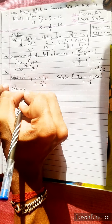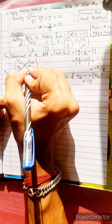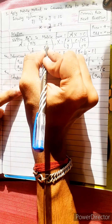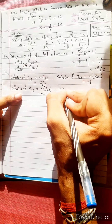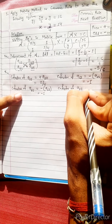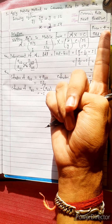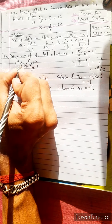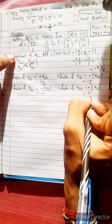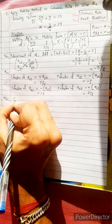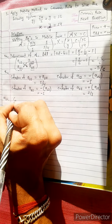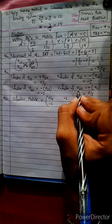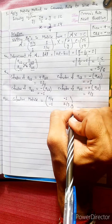Cofactor of a2,1: index sum is 2 plus 1 equals 3, which is odd, so it is negative. Cofactor of a2,1 equals minus a1,2, which equals minus 1. Cofactor of a2,2: index sum is 2 plus 2 equals 4, which is even, so it is positive. Cofactor of a2,2 equals a1,1, which equals 2/3. The cofactor matrix is thus built with values 1/4, minus 1, minus 1, and 2/3.